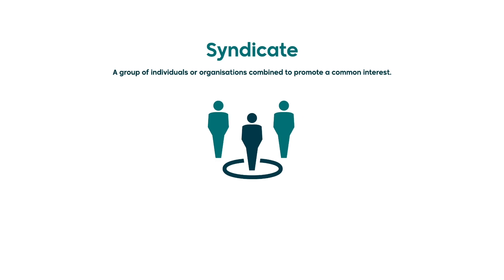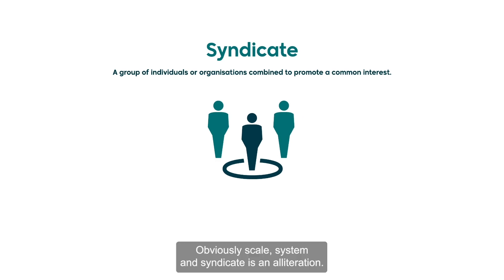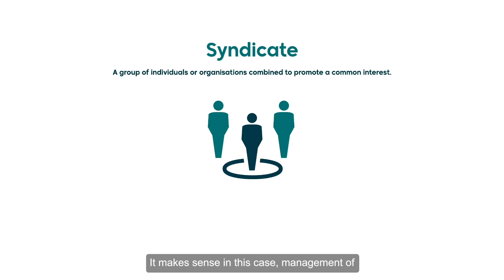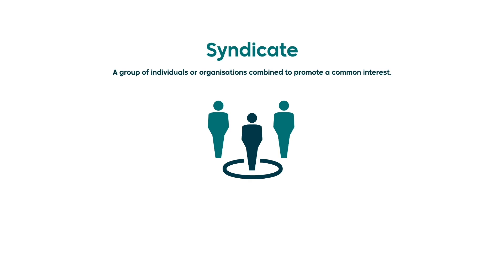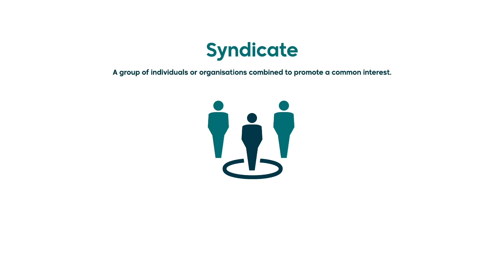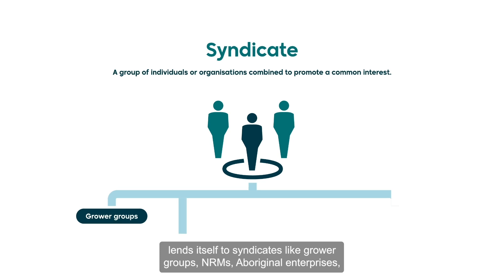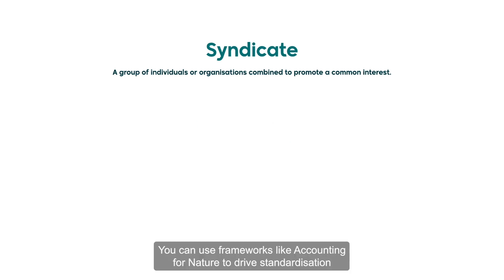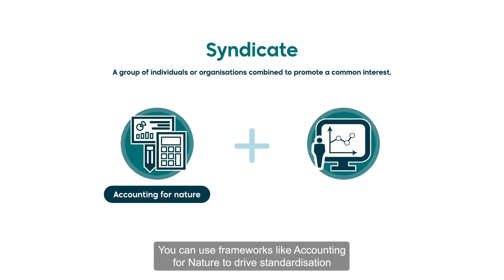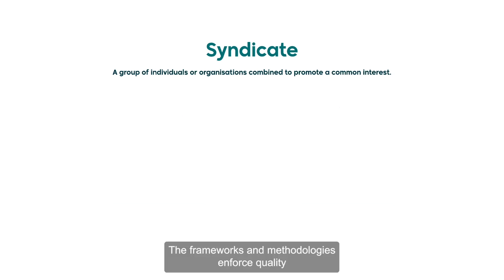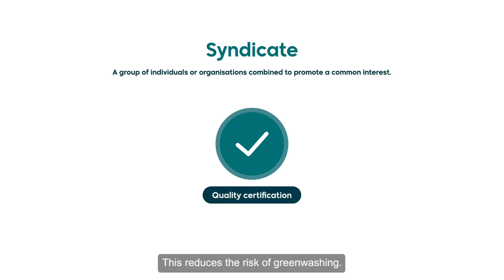The final area of interest is syndicate. The definition of syndicate is appropriate in this case: a group of individuals or organisations combined to promote a common interest. It makes sense in this case — management of and accounting for natural capital to enable scale. Syndicate represents an opportunity for collaboration to produce a total that is greater than the sum of its parts. Natural capital lends itself to syndicates like grower groups, NRMs, Aboriginal enterprises, agtech and primary production organisations working together. You can use frameworks like Accounting for Nature to drive standardisation and evidence-based analysis that is independently audited. The frameworks and methodologies enforce quality requirements that meet certification standards, which reduces the risk of greenwashing.